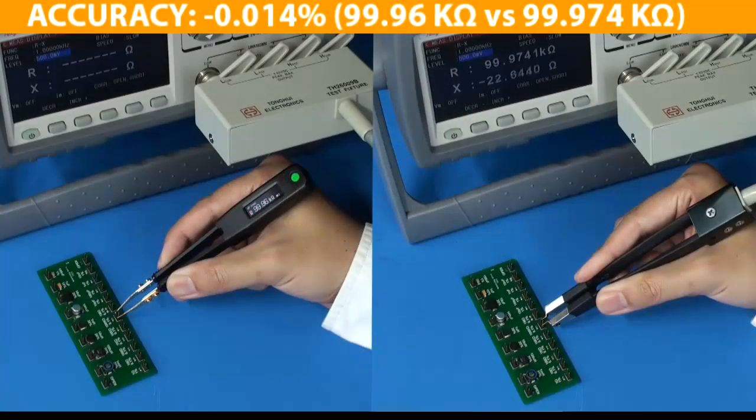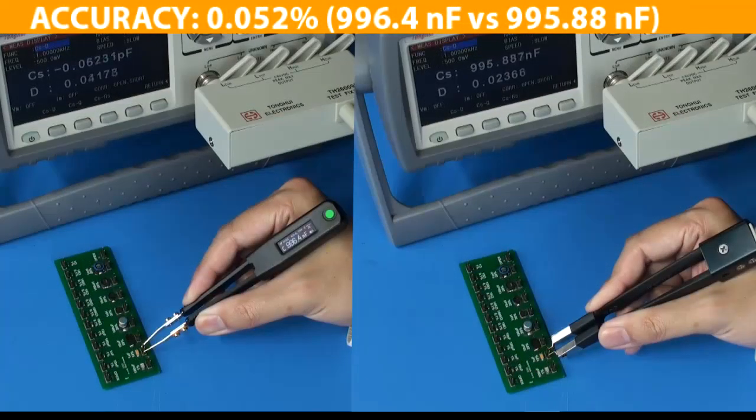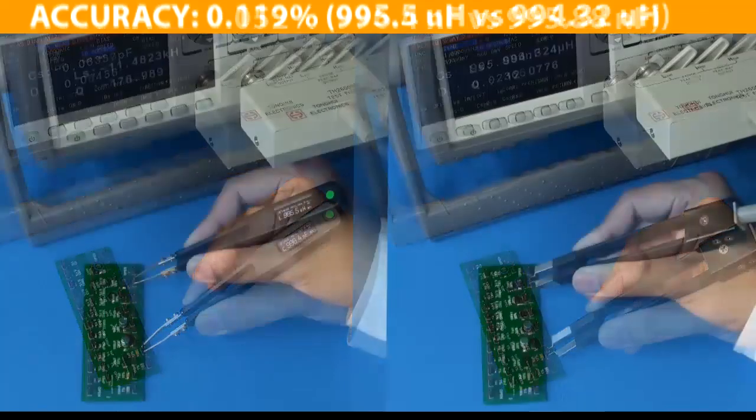The Elite 2 delivers a basic accuracy of 0.2% for both resistance and capacitance, and 0.4% for inductance.